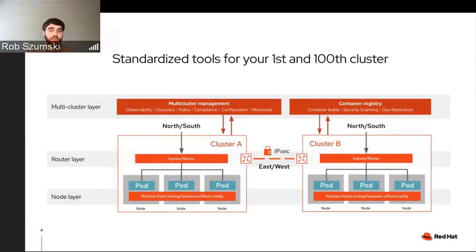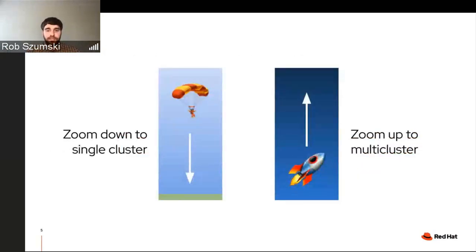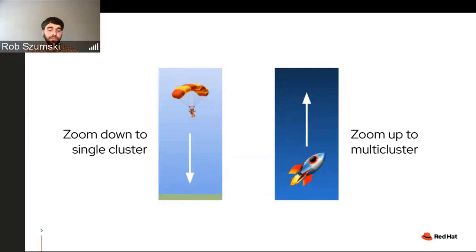We'll talk about tools available upstream in both Kubernetes and other ecosystems. You'll see two icons as we go through: a parachute guide, when we zoom all the way down into a single cluster, and a rocket ship when we zoom back up into the multi-cluster world. The work we do for fast packets for a telco workload is beneficial to your application even if you're at the multi-cluster layer, so you've got to build all these capabilities up.